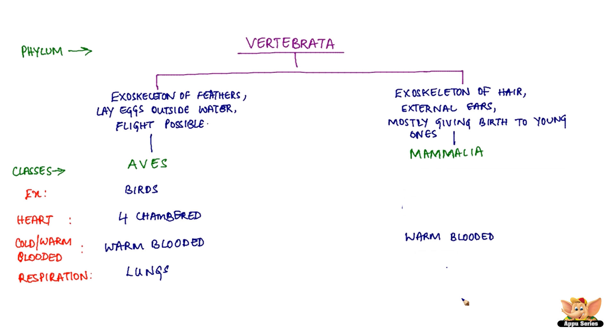Mammals are warm-blooded and have four-chambered heart. They breathe through lungs. All animals and human beings are mammals.